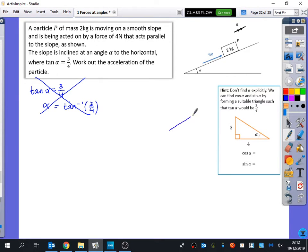You draw a triangle. With tan it's the opposite over the adjacent, so the 3 will be the opposite and the 4 will be the adjacent, and the hypotenuse is 5. From that, we can establish that cos α is the adjacent over the hypotenuse, which is 4 over 5. And sin α is the opposite over the hypotenuse, which is 3 over 5. You could use 0.8 and 0.6 if you want.